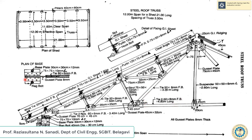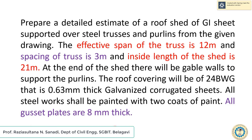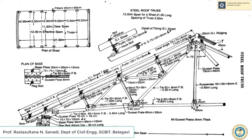The plan of the base and the plan of one connection are also shown. At the end of the shed there will be gable walls to support the structure. The roof covering will be of 24 BWG (0.63 mm) galvanized corrugated sheets. All steel work shall be painted with 2 coats of paint. All gusset plates are 8 mm thick.